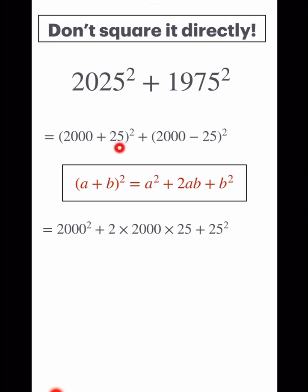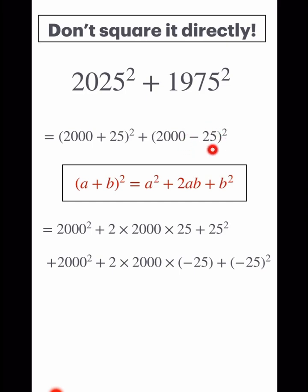So we get this expression. Now apply the same identity to 1975 squared, but this time b is minus 25. So we get this expression.